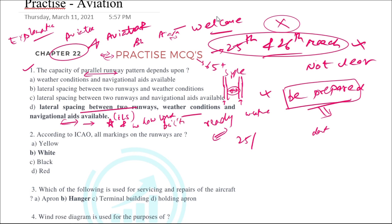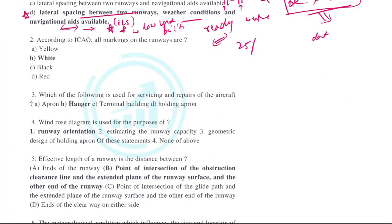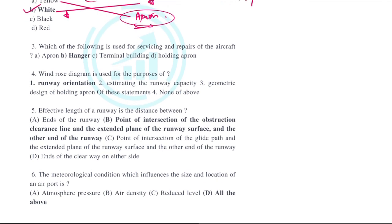The second question: according to ICAO, all markings on the runways are white in color. White marking is for the runways, whereas yellow marking is for the apron. This distinction should be remembered.